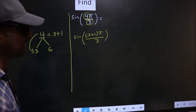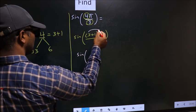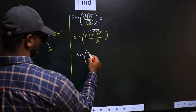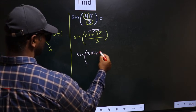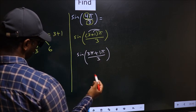Next, sin of... Now you should open up the brackets. So you get 3π plus 1π by 3. Next.